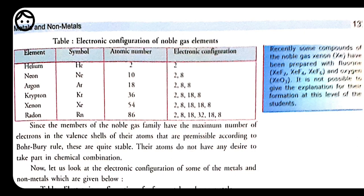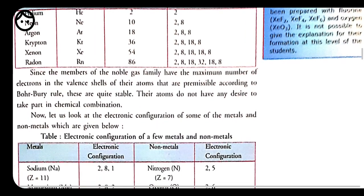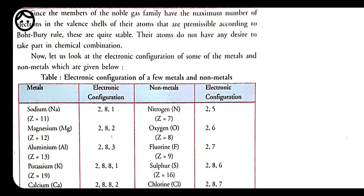All these noble gases are stable forms of elements. The outermost shell having 8 electrons is considered the stable form. That's why noble gases do not take part in chemical reactions — they do not need anything. If your stomach is already full, you won't ask for food. Similarly, these elements are already stable and do not need anything to complete their octet.